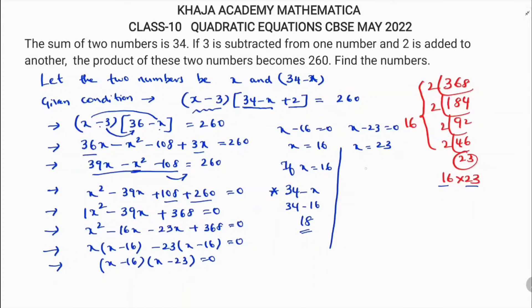If x is 23, then the other number is 34 minus 23, which is 11. So the two possible pairs of numbers are 16 and 18, or 23 and 11.